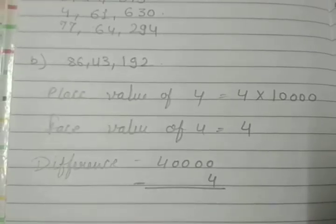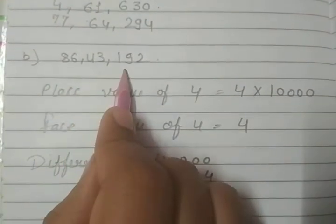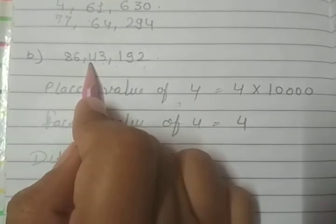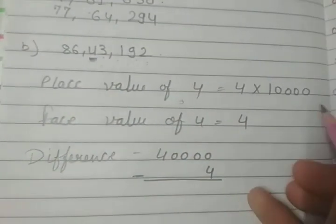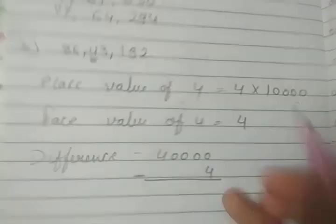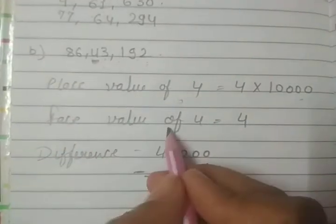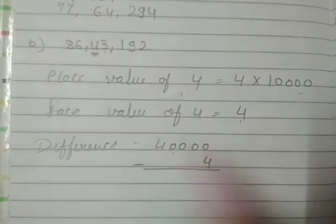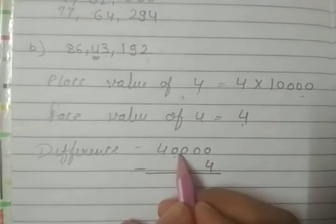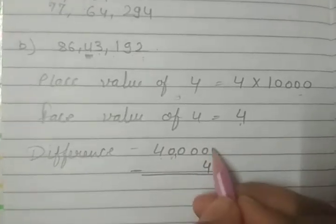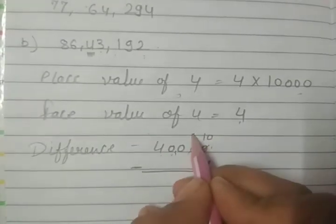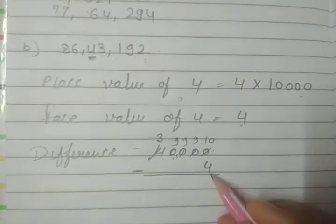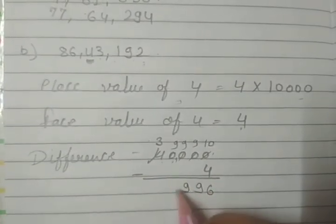Next, B is 86,43,192. The place value of 4 is in the ten thousands place. The digit 4 is in the place of 10,000, so we multiply 4 into 10,000 to get 40,000. The face value of 4 is 4. The difference between place value and face value is 40,000 minus 4. Since 0 is less than 4, we take carry from the 10,000 place.